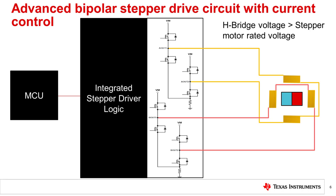The sense resistor shown at the source of the low side FETs is used to provide a feedback loop inside the driver. The current flowing through the sense resistor creates a voltage which is compared against a reference voltage to regulate the current.